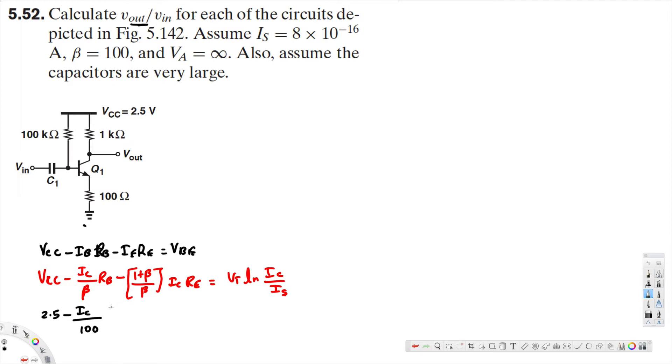That's 100 times 10 to the power of 3. Then minus (1 plus beta), 1 plus 100 divided by 100 times I_C times R_E. R_E is the emitter resistance. Base, collector, emitter—this one is the emitter, which is 100 ohms.